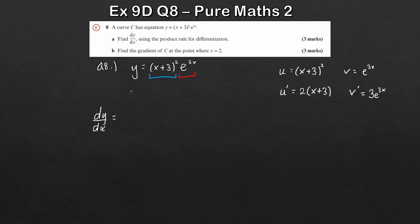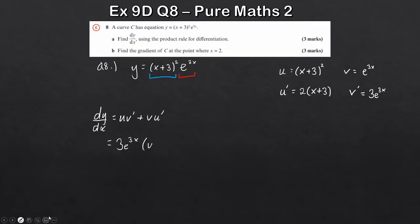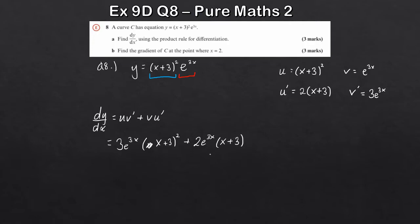Writing it out in full: dy by dx equals u times v prime plus v times u prime. That gives us 3e to the 3x times x plus 3 squared, plus 2e to the 3x times x plus 3. That's our differential. We can't simplify it much further at this point — we could factorize if we want, but for now we'll leave it like this.